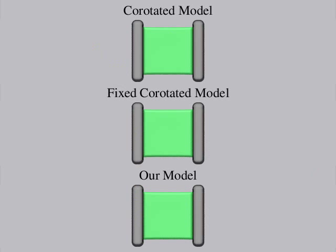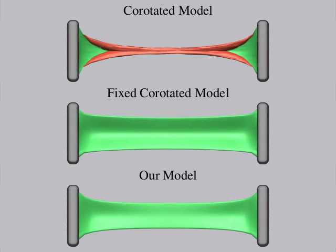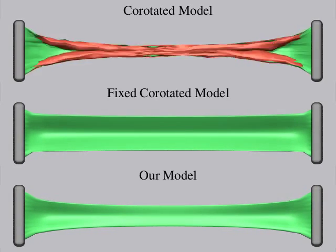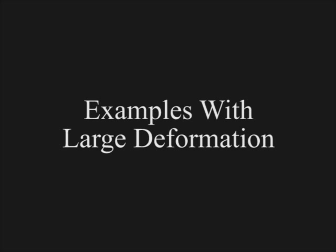This weakness of co-rotated is particularly apparent when modeling large deformations. Here, we stretch a cube with our C2 extended model and with co-rotated. Our model handles the test without problems, while the co-rotated model inverts then behaves poorly. The inverted regions are colored in red. Adding a volume-preserving term to the co-rotated model partially improves its behavior.